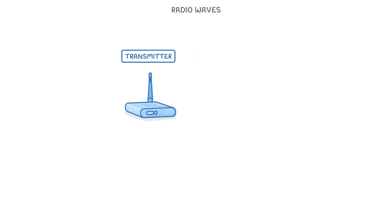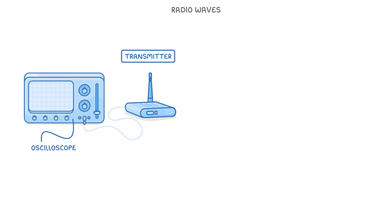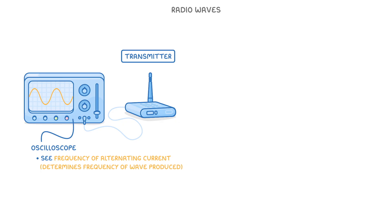To do this for radio waves, we use a device called a transmitter, which is normally connected to an oscilloscope. The oscilloscope allows us to see the frequency of the alternating current that we're using, because we can see the frequency of the wave on the screen. And the reason we care so much about the frequency is that it's the frequency of the alternating current that determines the frequency of the wave that we're going to produce.